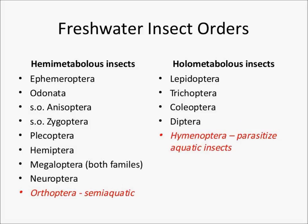An overview of freshwater insect orders in North America: freshwater insects fall into two major groups — the hemimetabolous insects and the holometabolous insects.